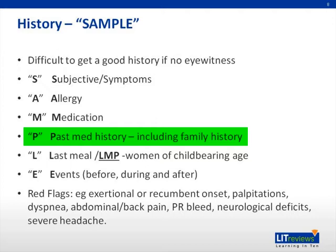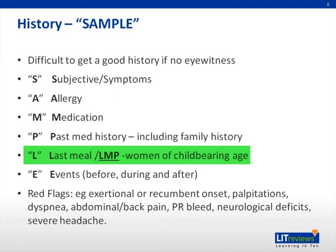A family history of sudden death is also significant, especially if it is associated with a family history of deafness, which can point to one of the long QT syndromes — Jervell-Lange-Nielsen syndrome. The L in the SAMPLE history often stands for last meal, but in women of childbearing age, it should also remind us to ask for the last menstrual period. Pregnant women may experience syncope, and sometimes they may also have an ectopic pregnancy, which is an immediately life-threatening condition.